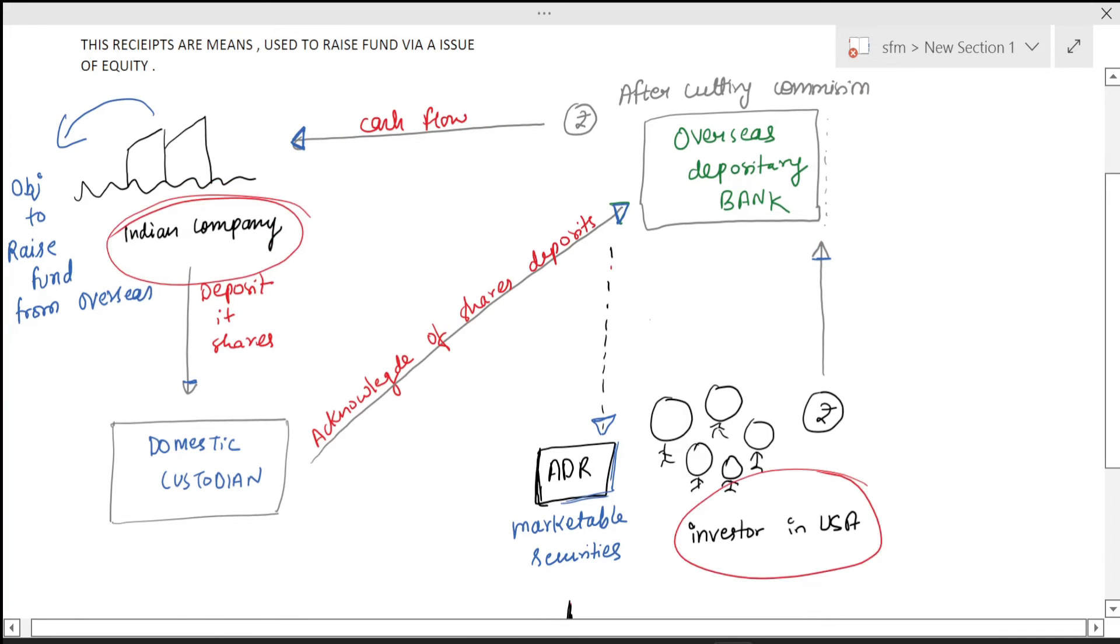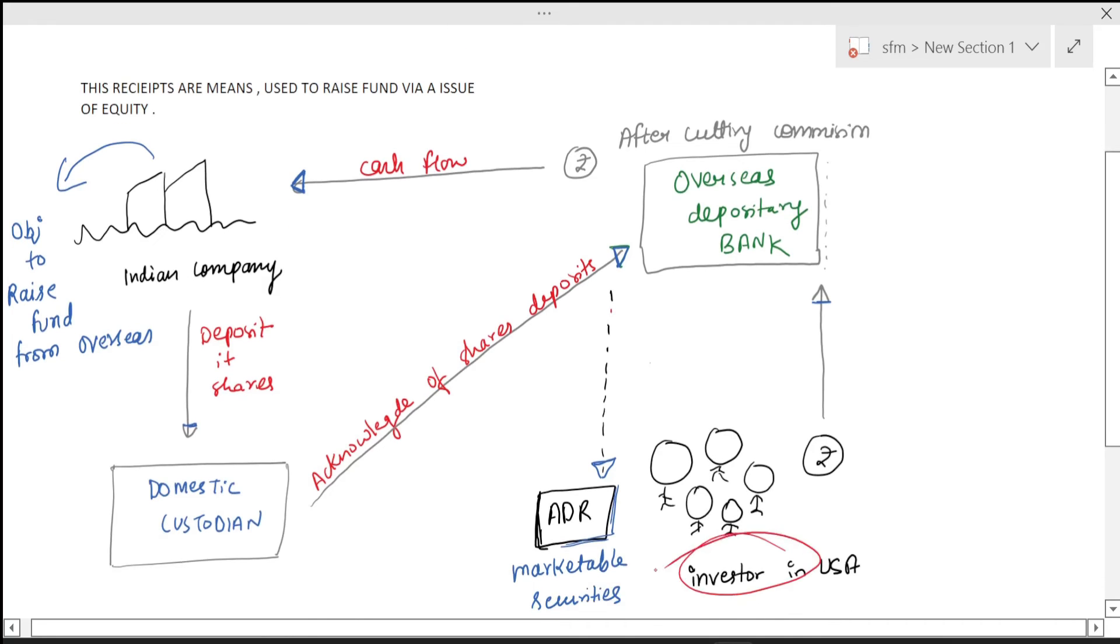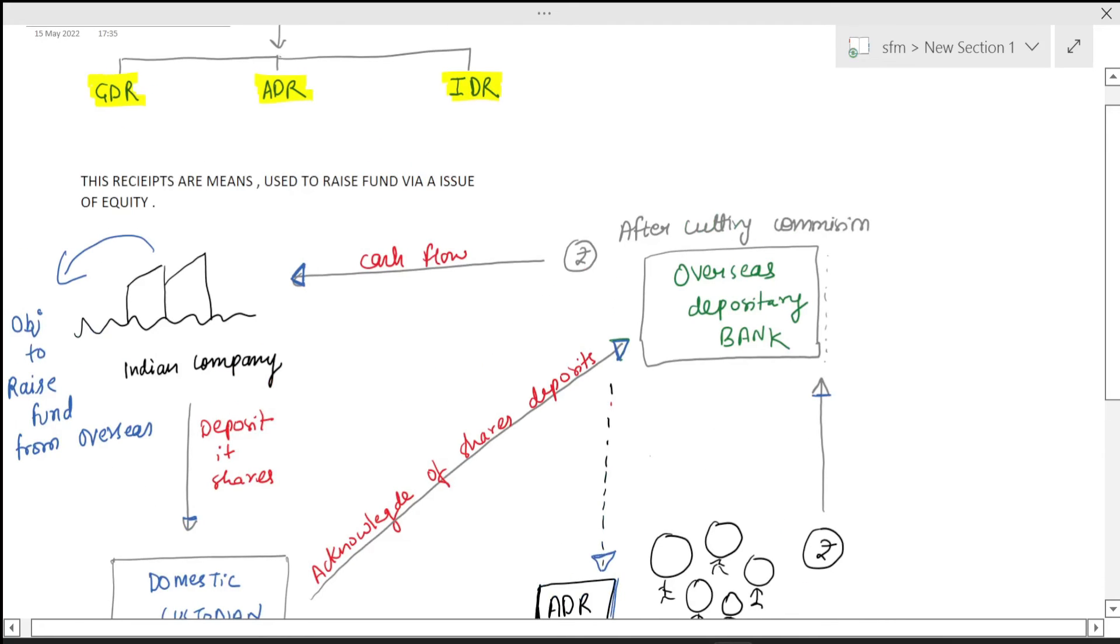So this is the concept of ADR. GDR and IDR are also similar to this. IDR is just the opposite - here a foreign company raises funds from Indian buyers. There are also European receipts.